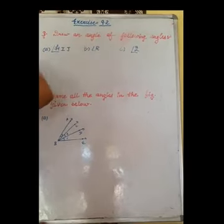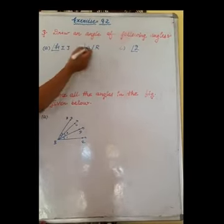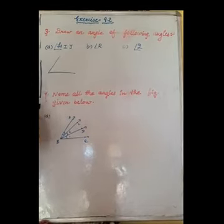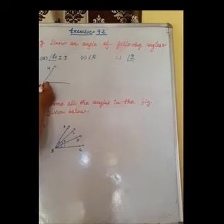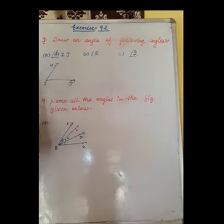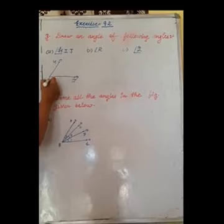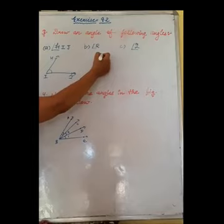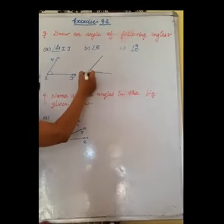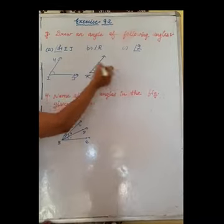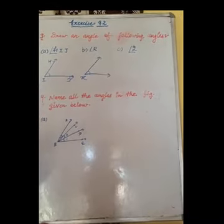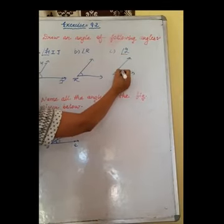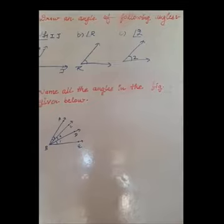Draw an angle for the following angles. You have to draw the angles for all three. See, angle HIJ: firstly, form the symbol, then write HIJ. These are the arms and this is the vertex. Second, you have to draw angle R. Angle R will be like this. This is the way to form angle R. Next is angle 2. Firstly, form the symbol, and then write 2. This is the way of writing angle 2.